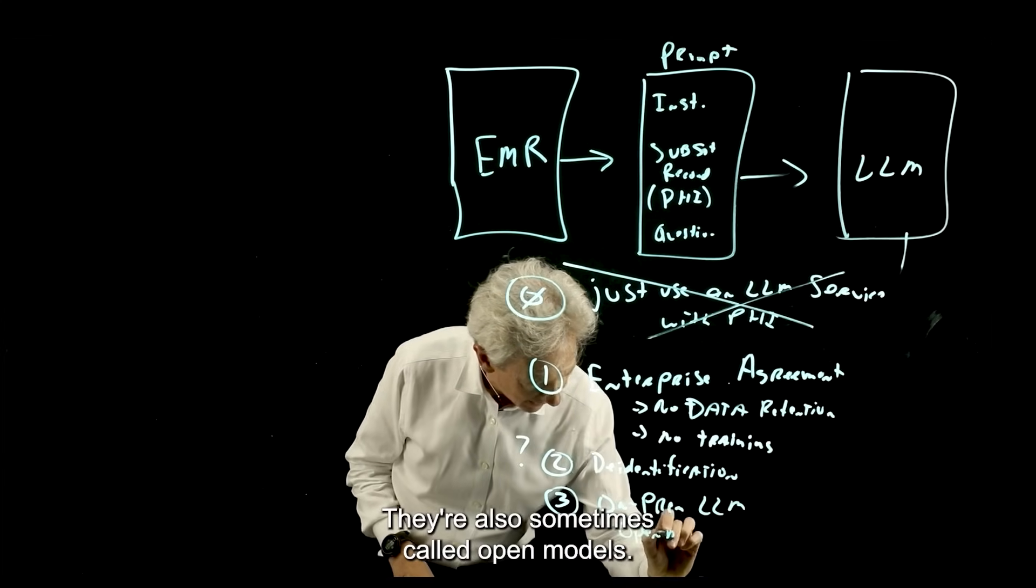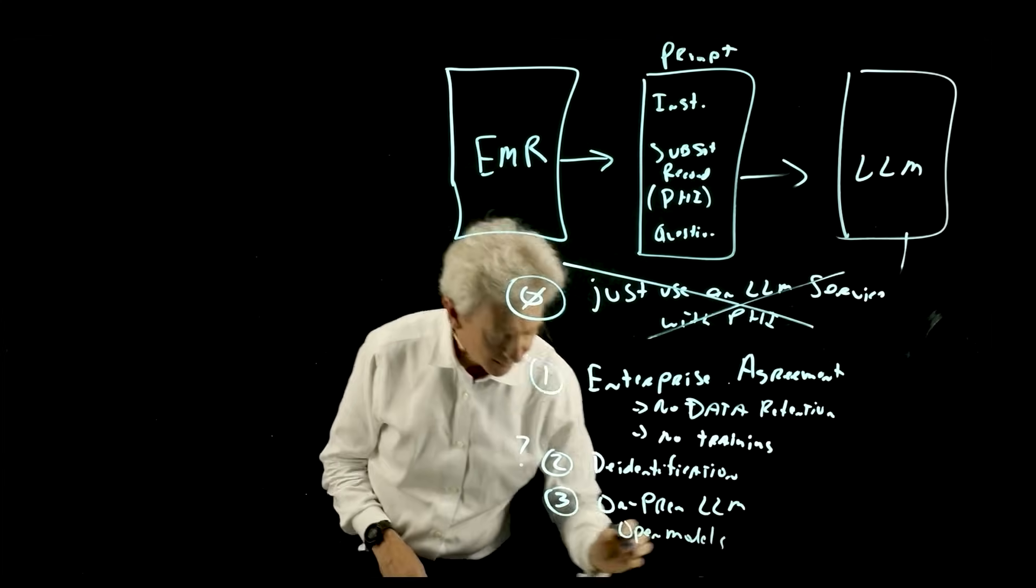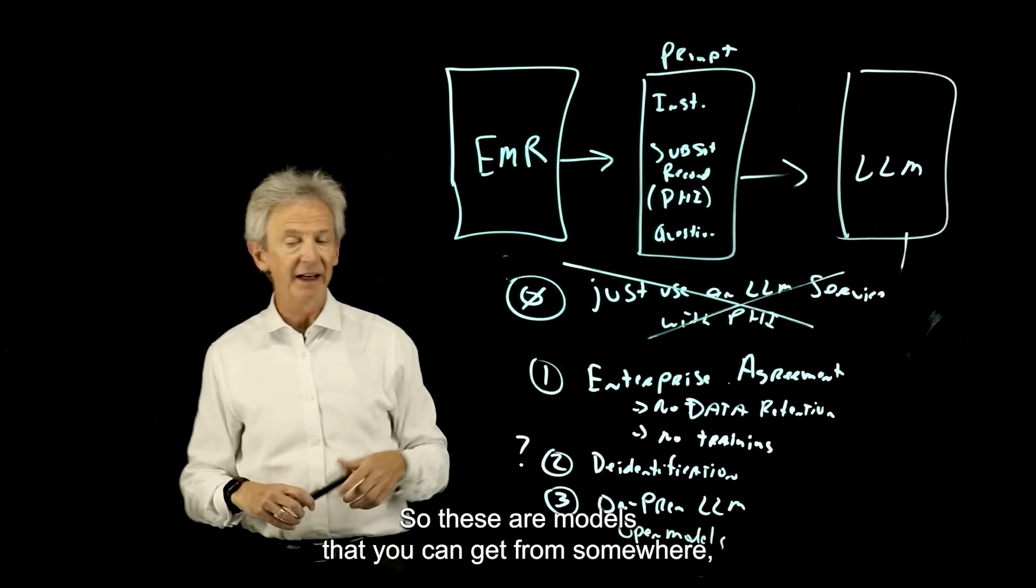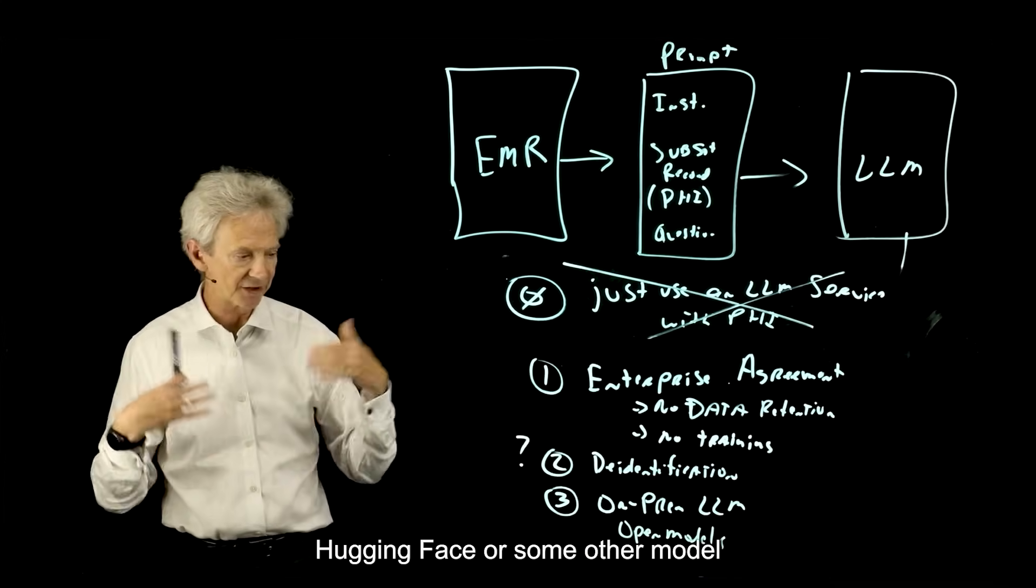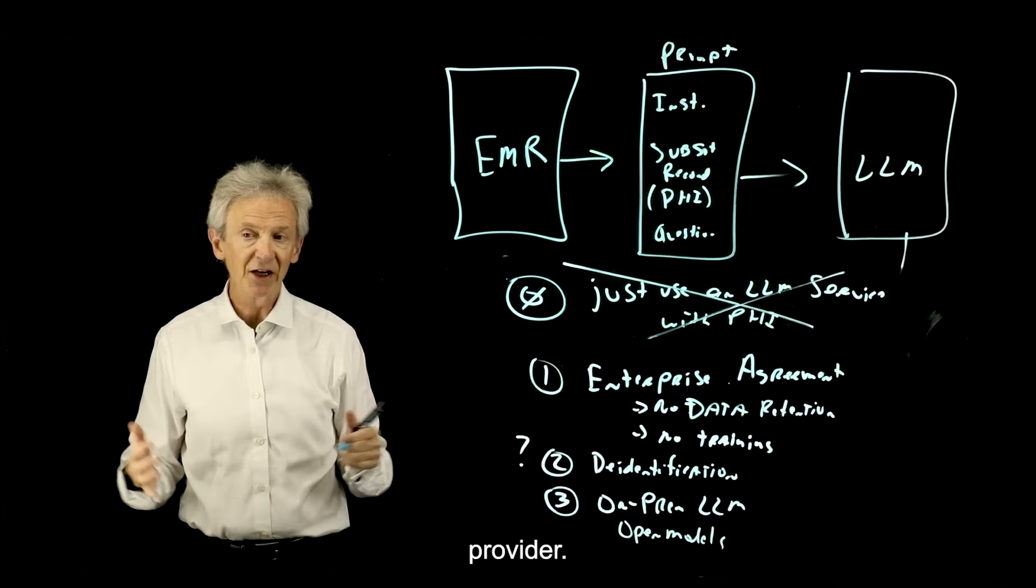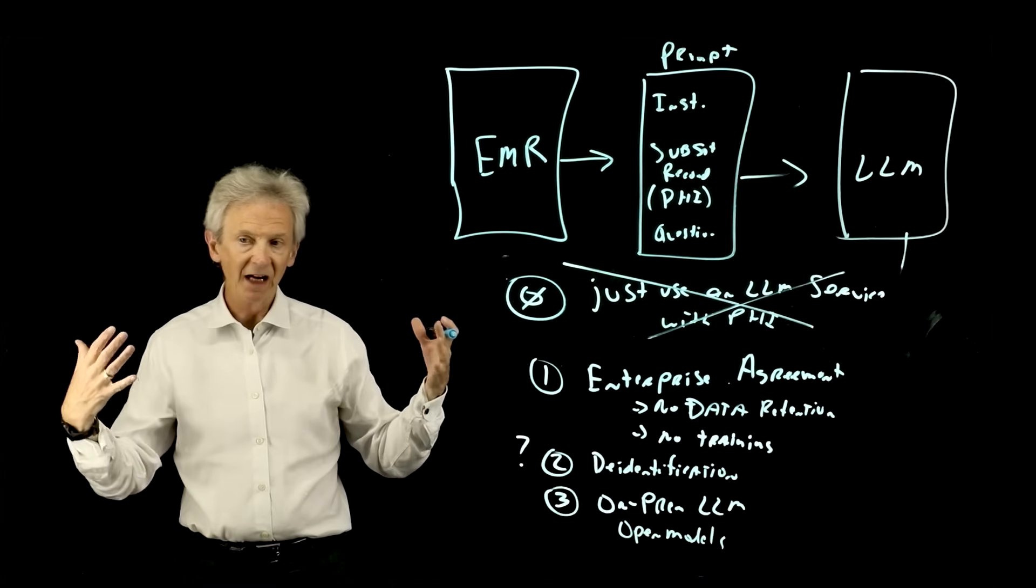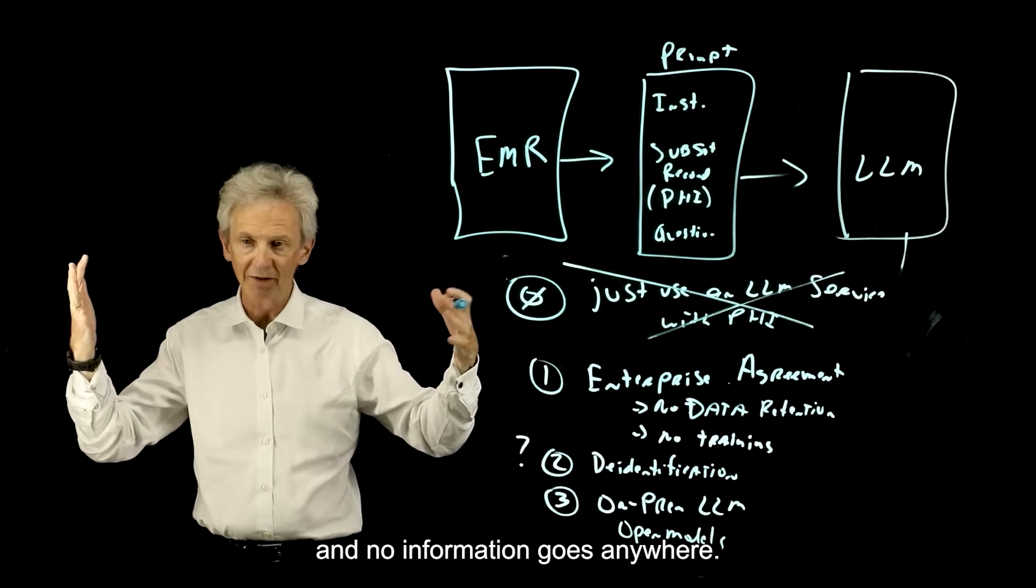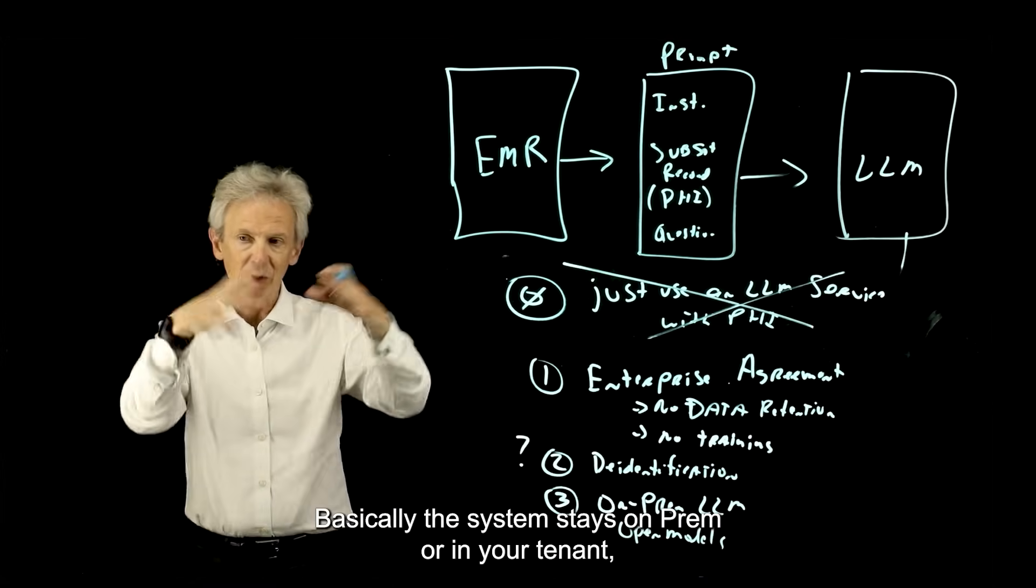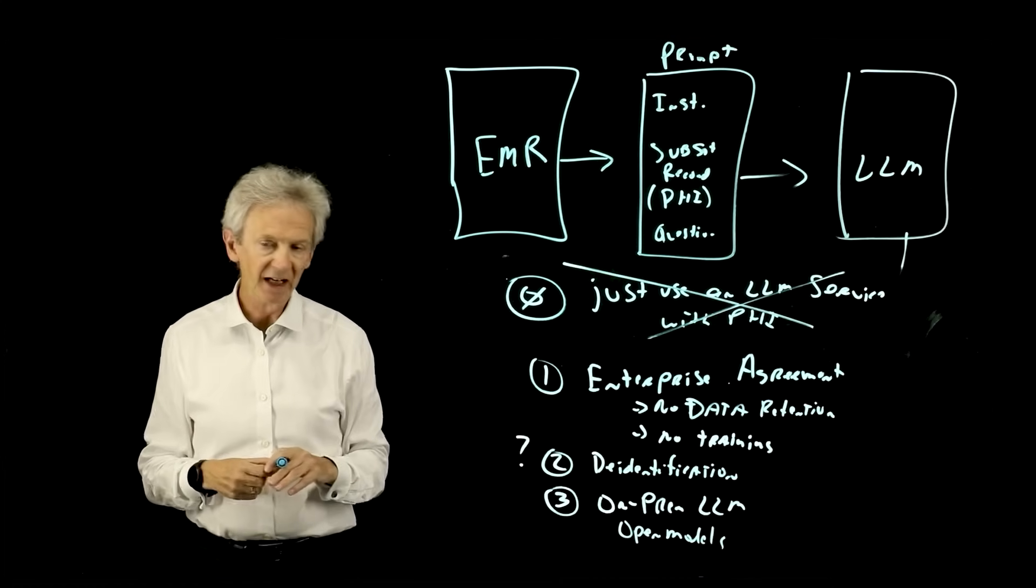And the third is an on-prem LLM. They're also sometimes called open models. So these are models that you can get from somewhere, hugging face or some other model provider. You can actually install these on-prem, and no information goes anywhere. Basically, the system stays on-prem or in your tenant, in your cloud tenant.